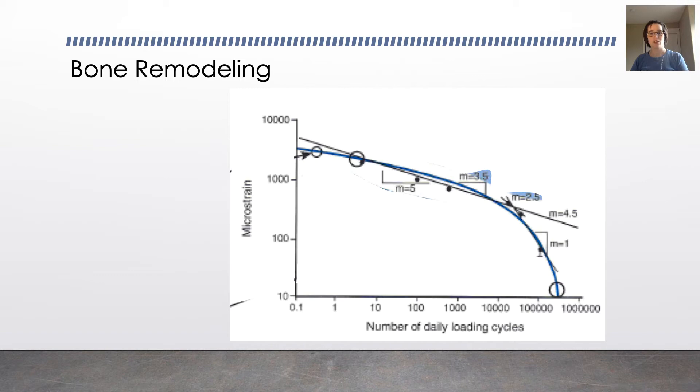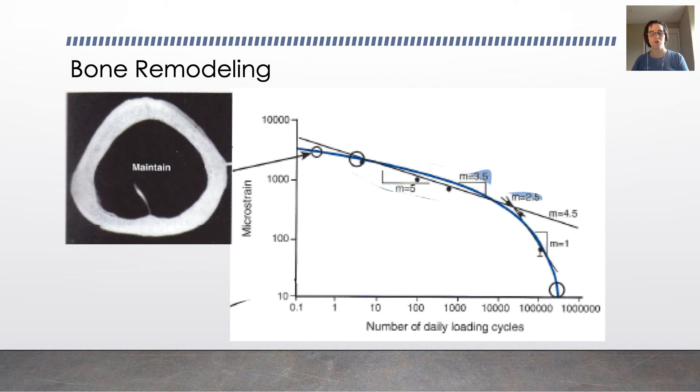So this is a curve of homeostasis, showing you microstrain, a number of loading cycles over the day. And you can see that there's a relationship there. And if you stay there, you'll maintain a healthy bone.